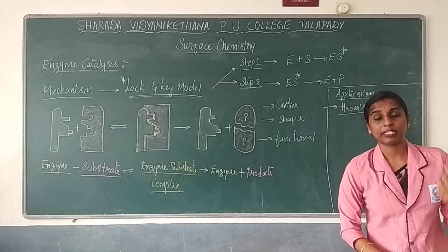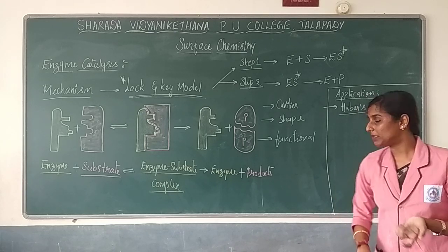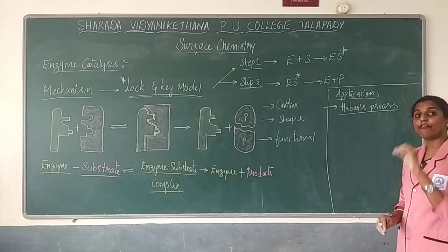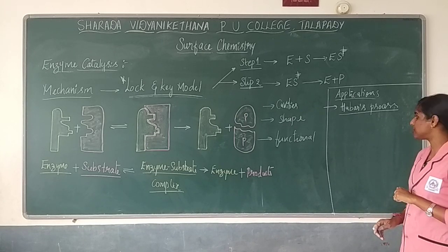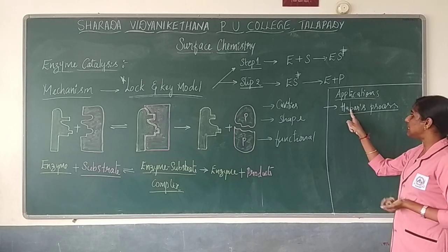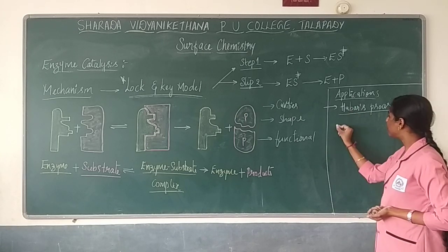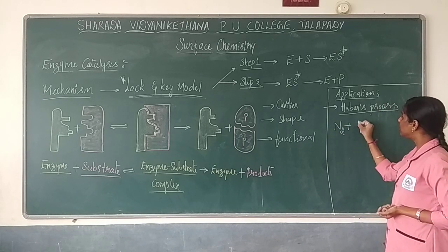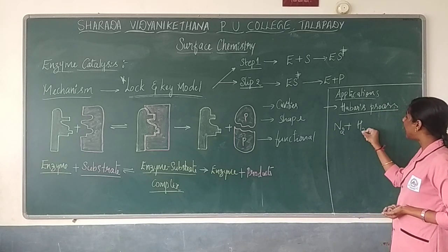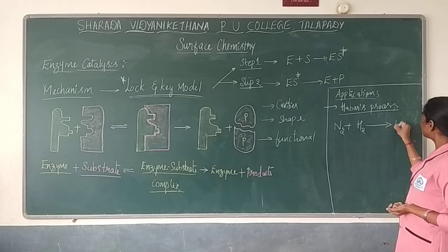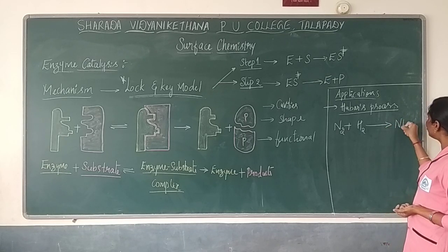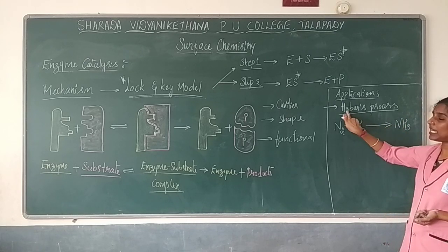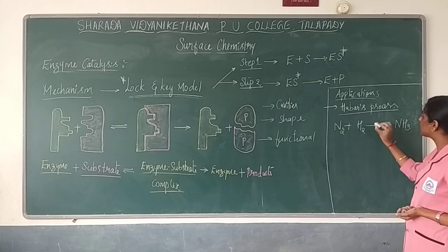We will be covering this in the next lesson. I will show certain mechanisms where we will be using catalysts. The first process to be considered is the Haber process — the reaction of nitrogen with hydrogen to convert into ammonia. The conversion of ammonia will be done with the process called the Haber process.